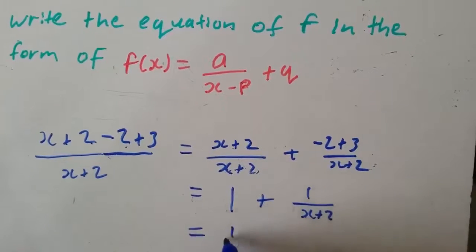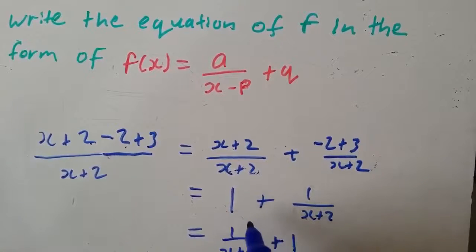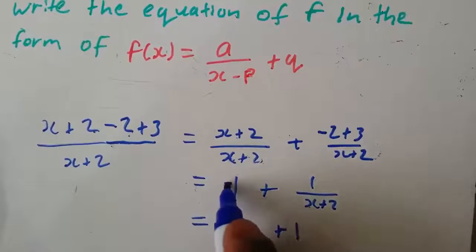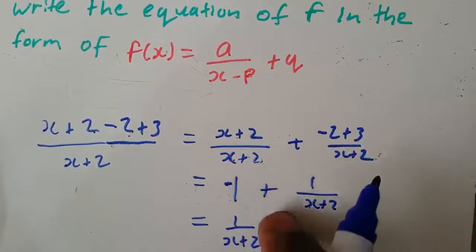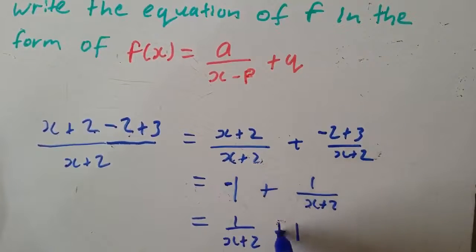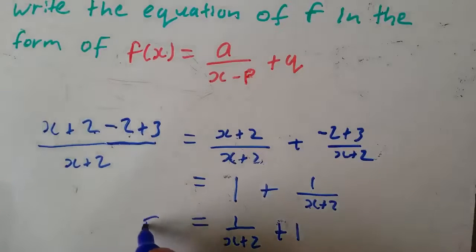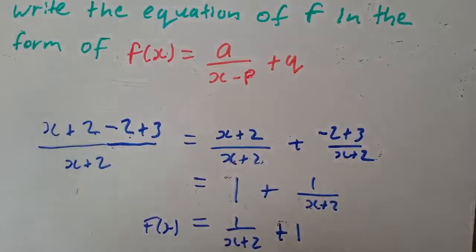When we rearrange this, it's going to be 1/(x + 2) + 1. If this were a negative 1, we would take the negative 1 with it. And there we have it — we have now written it in the standard form. So f(x) = 1/(x + 2) + 1.